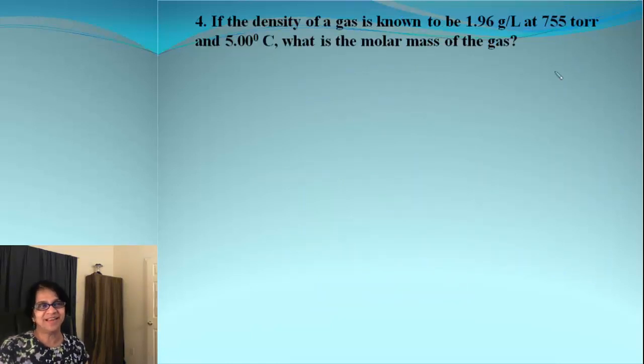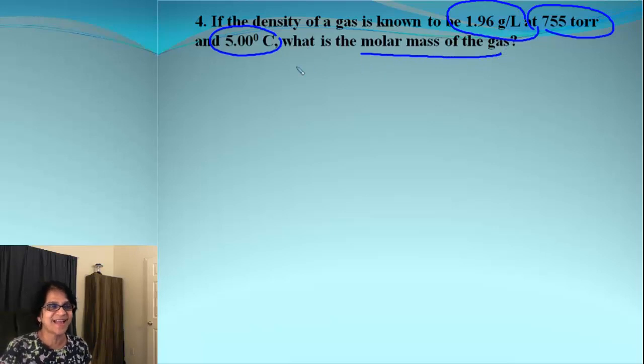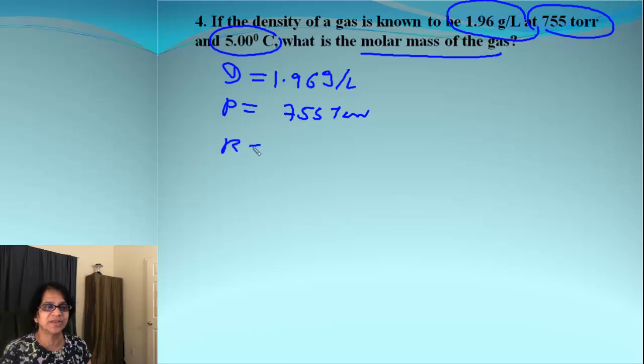Let's do one more final problem. In this case, density is given to us. Pressure is given. And temperature is given. We need to find out the molar mass for the gas. Let's list all the values. That's density. Then we have pressure. Remember, if pressure is in torr, we need to make sure that R value is also in torr, which is 62.4. And then we have temperature, 5 degrees Celsius, which is 5 degrees plus 273. And that will be 278 Kelvin.